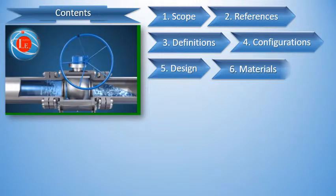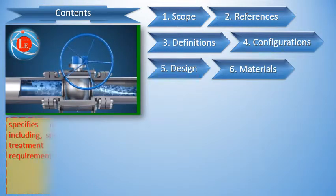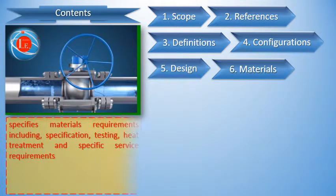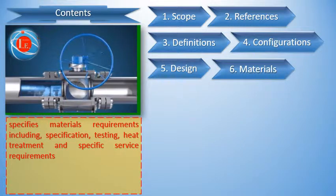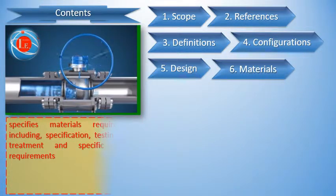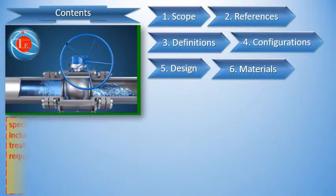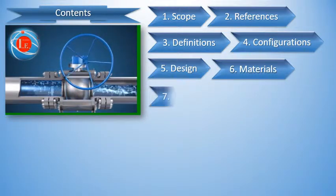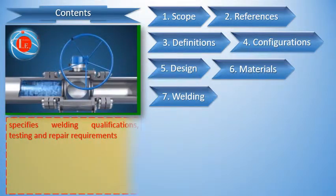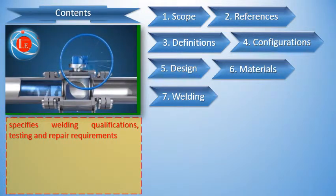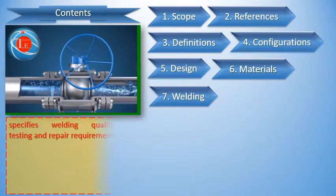Section 6 specifies materials requirements including specification, testing, heat treatment, and specific service requirements. Section 7 specifies welding qualifications, testing, and repair requirements.